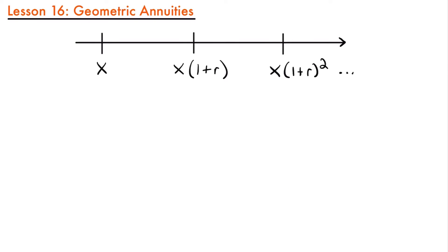Welcome back. Today we're going to be talking about geometric annuities. Sometimes an annuity or a series of payments will have payments that increase or decrease with every payment period — by the payer's choice or to adjust for inflation. We have a way to calculate such annuities where the payments change, and one way is when the payments form a geometric progression.